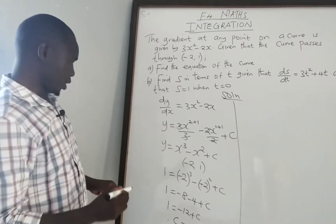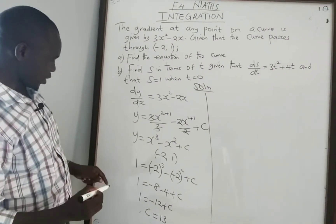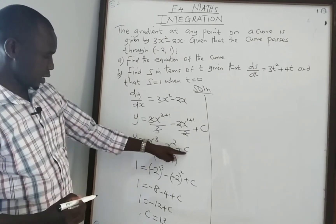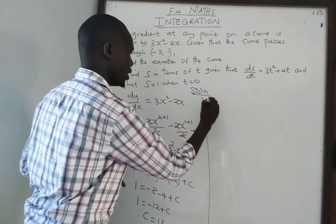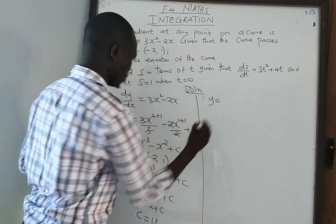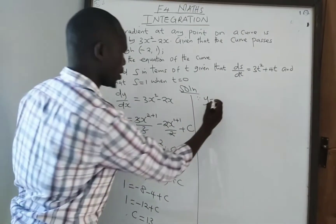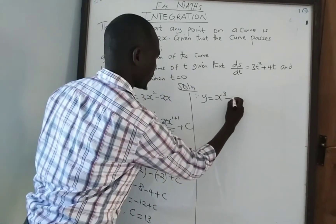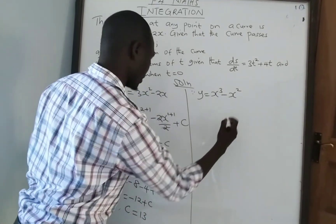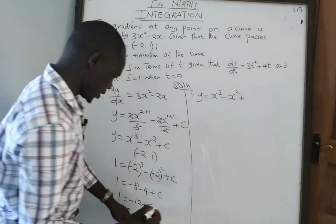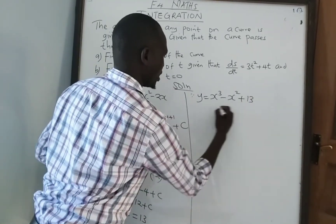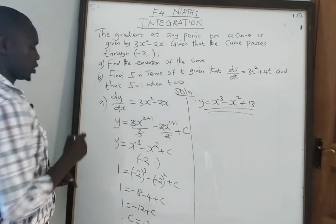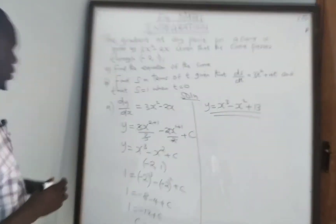Now we write the specific equation by inserting the value of c. Therefore the answer is y equals x cubed minus x squared plus 13. That gives us the answer to part a.